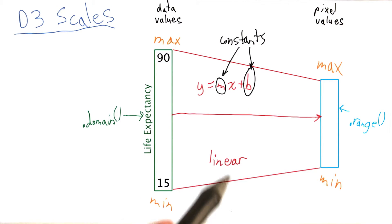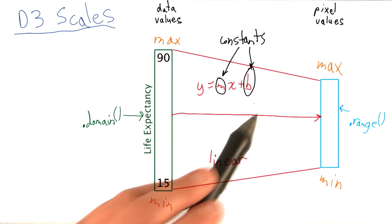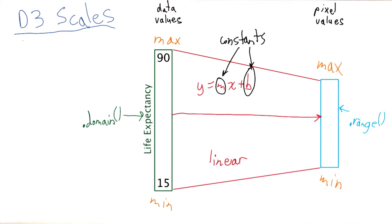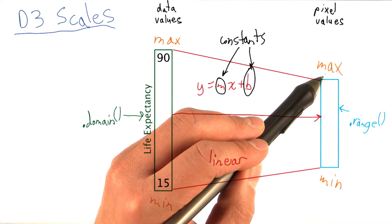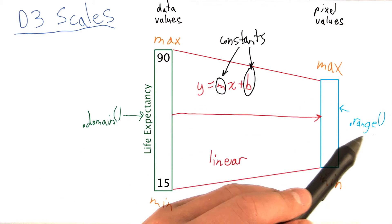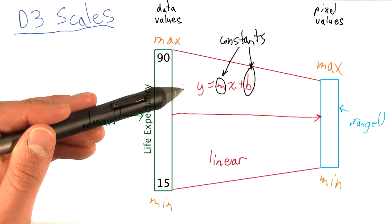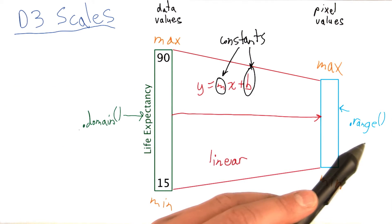You do not have to worry with the value of m or the value of b are in this case. That is one of the very nice conveniences that D3 provides for us. All we need to specify are the minimum and the maximum of our domain and the minimum and the maximum of where we want to map our values to. And the D3 scale function figures out the appropriate values and constants for the linear function that maps the domain into the range.